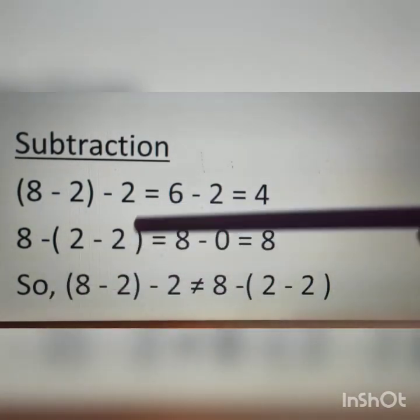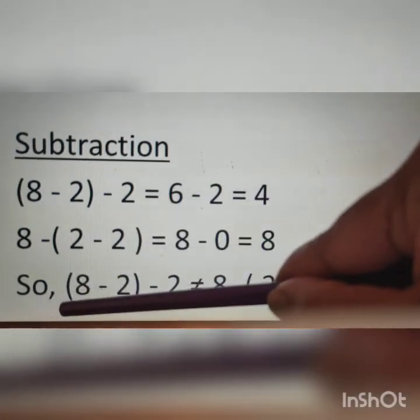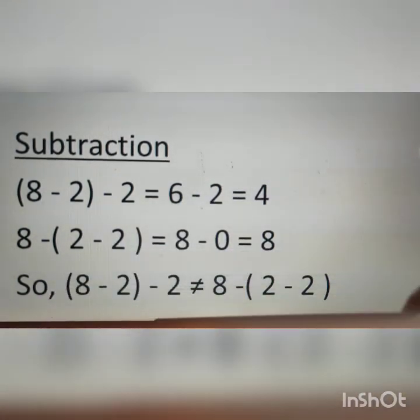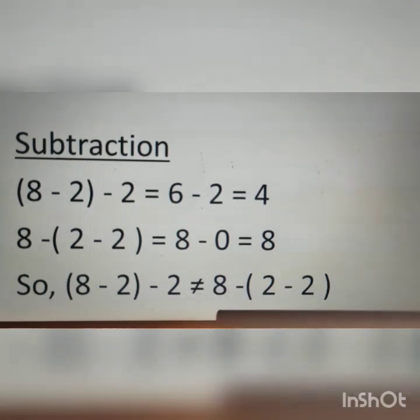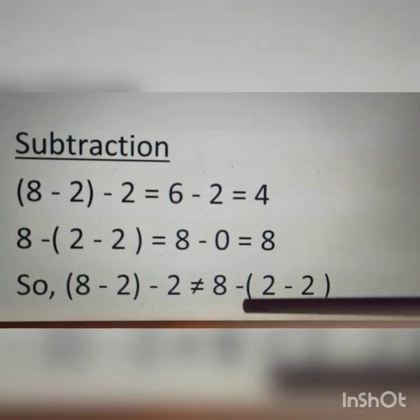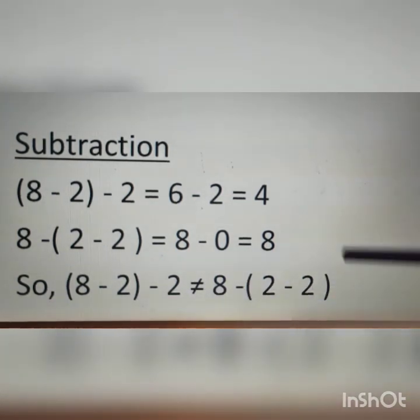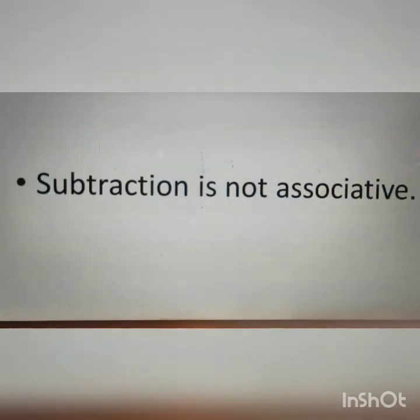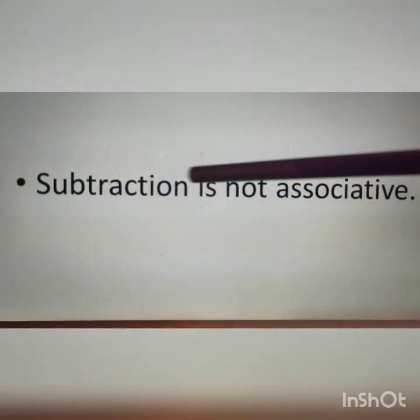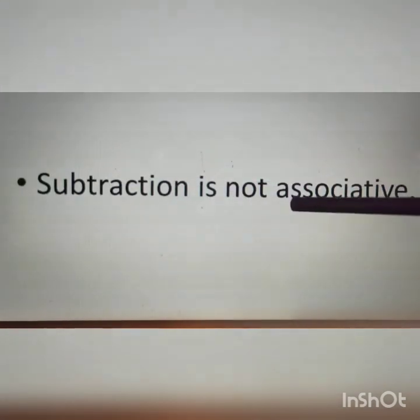So we can say (8 − 2) − 2 is not equal to 8 − (2 − 2). Therefore subtraction is not associative.